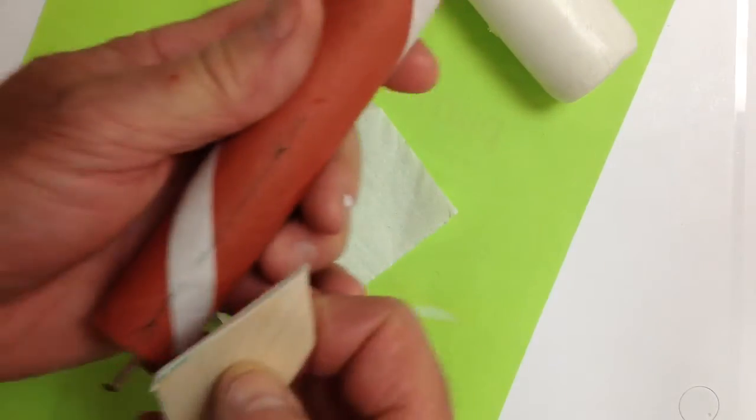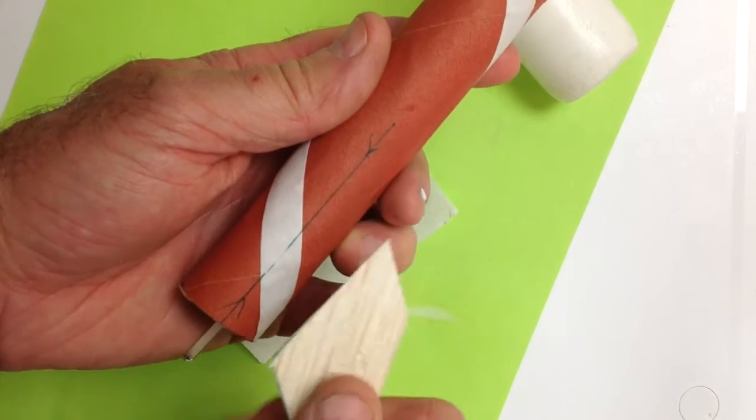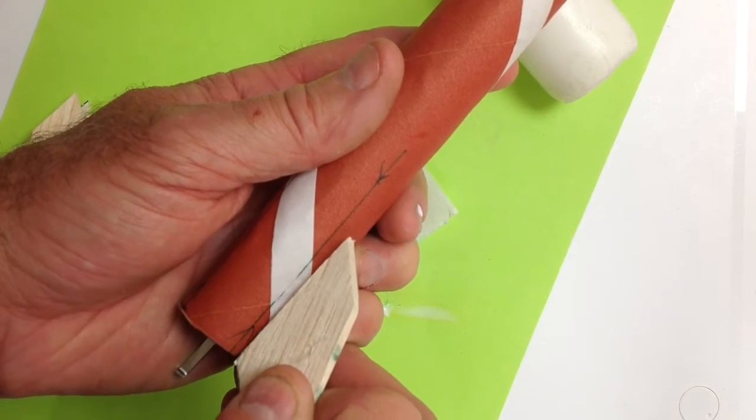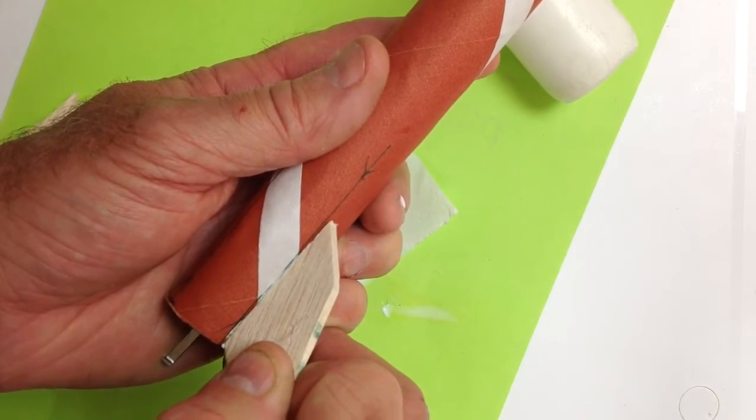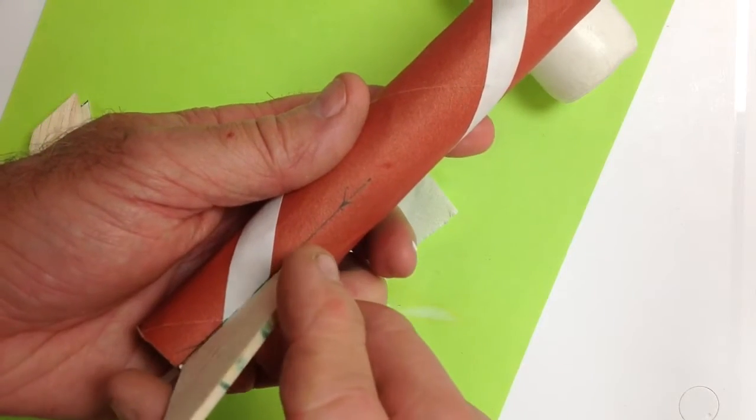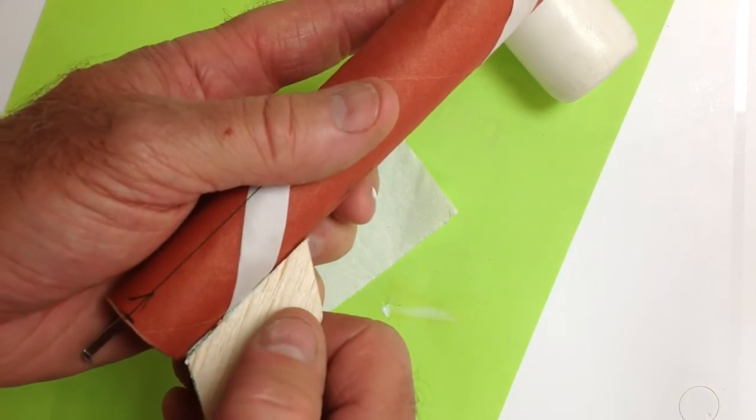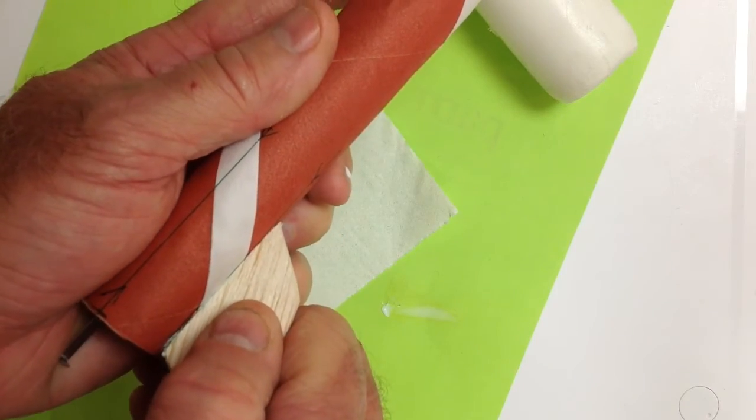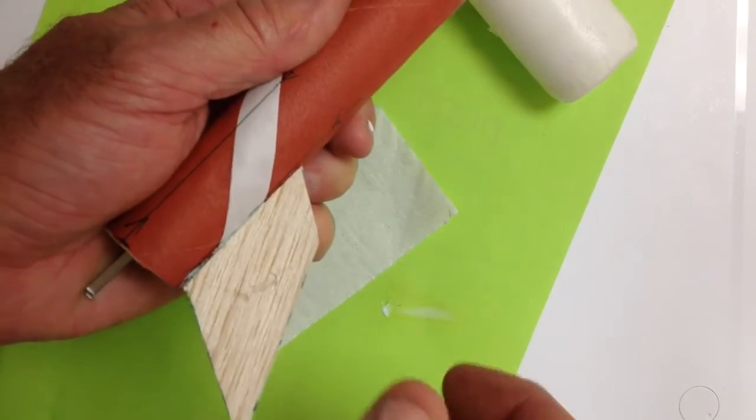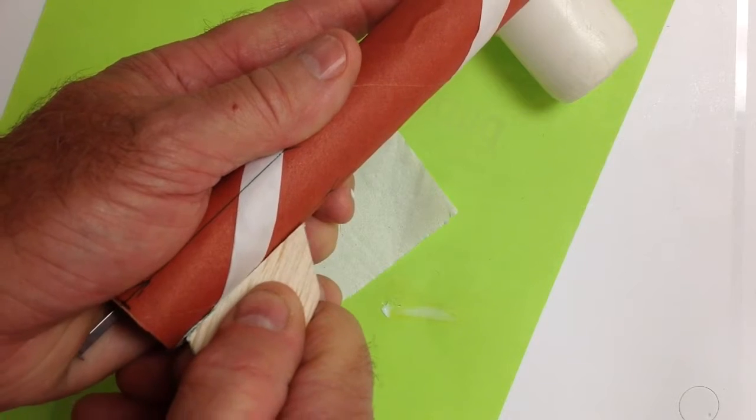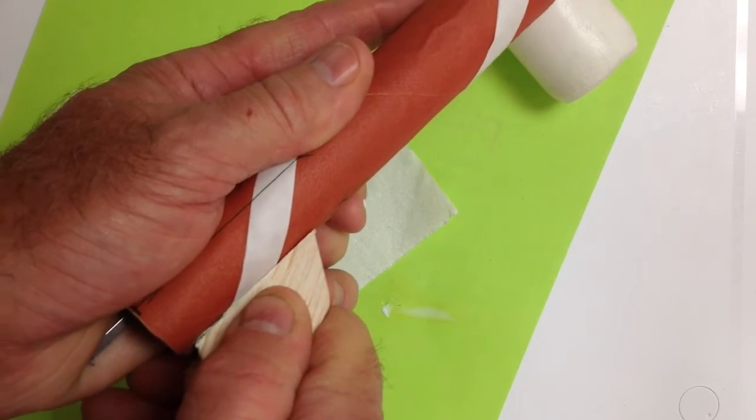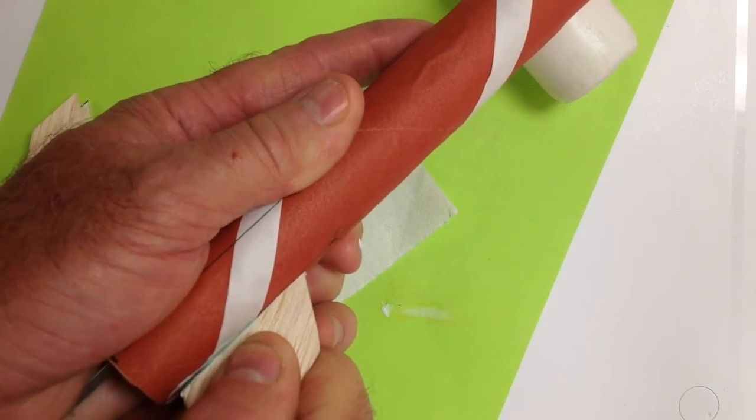And then what I like to do when I glue the fins on is I like to go to the right of my line. And I should just barely see my line. Okay, and then the thing that I do once I get it generally in place is I take and I press the fin onto the rocket body tube and I move it back and forth. What that does is it generates a little bit of heat from the friction.